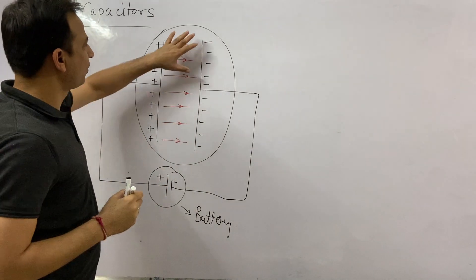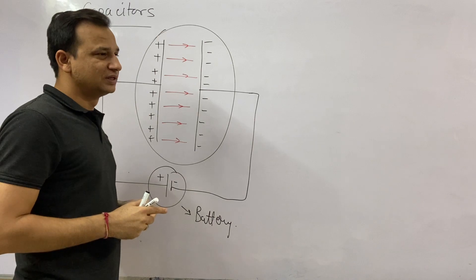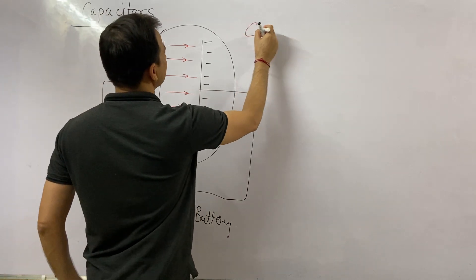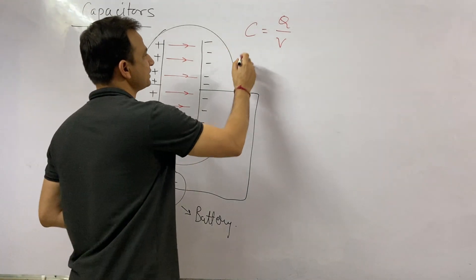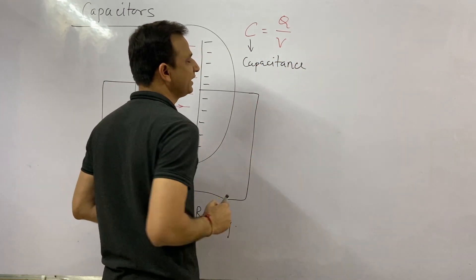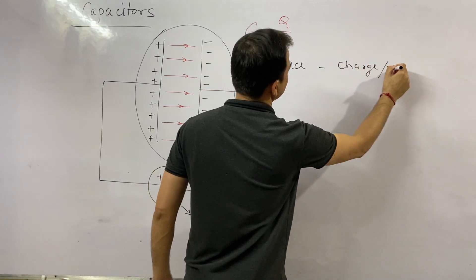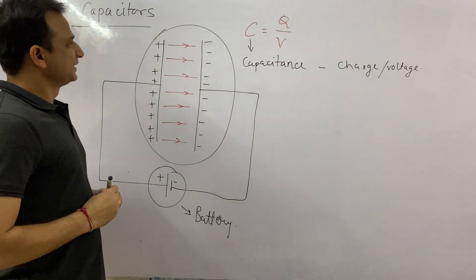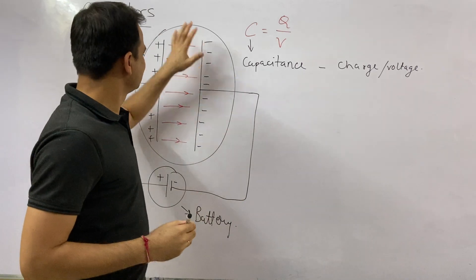The capacitance of a capacitor — how much charge it can store per unit of voltage — is given by the formula C is equal to Q by V. Capacitance is defined as the charge per unit of voltage. This formula depends on the voltage and how much charge is stored on the plates.